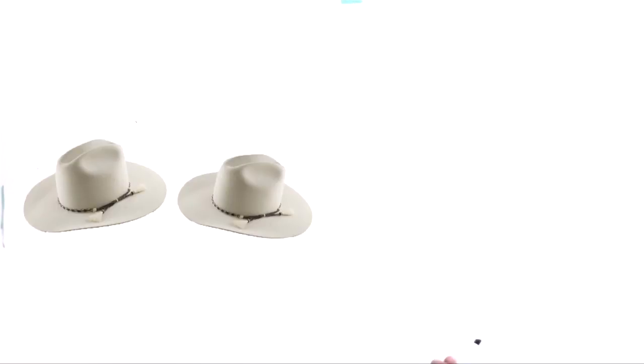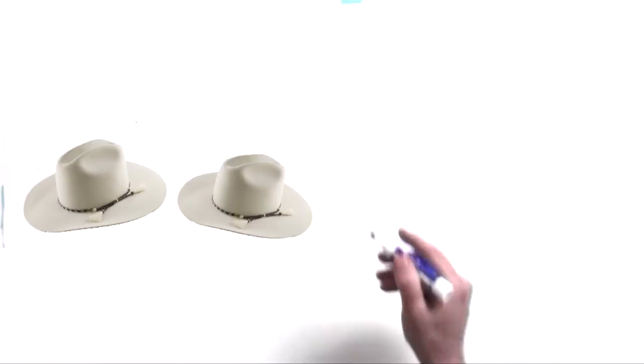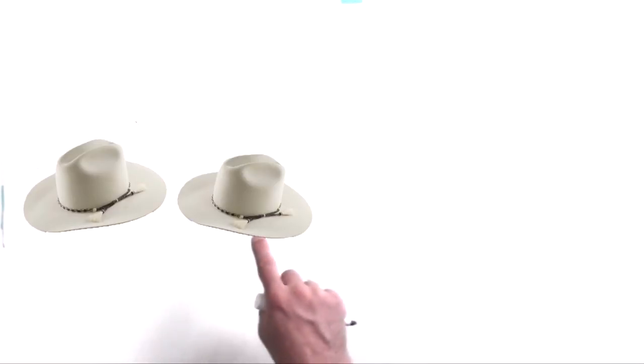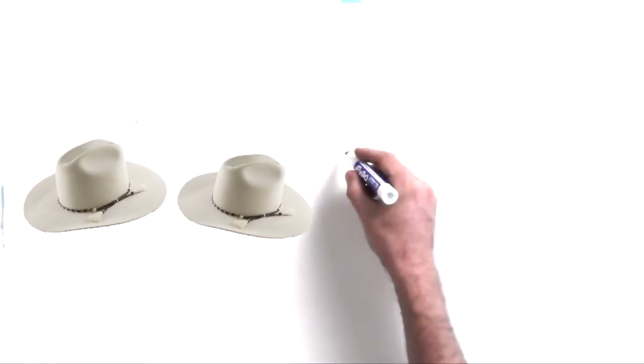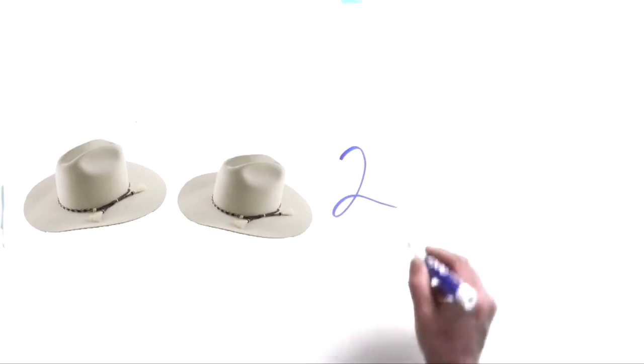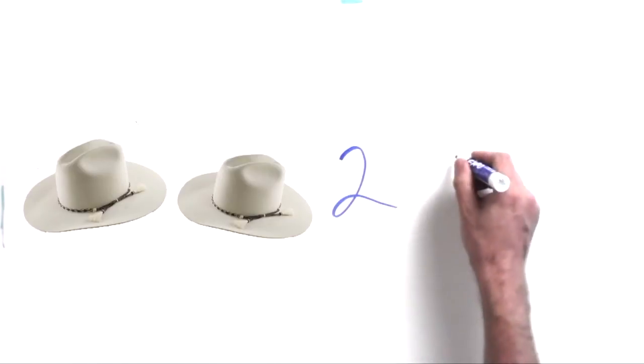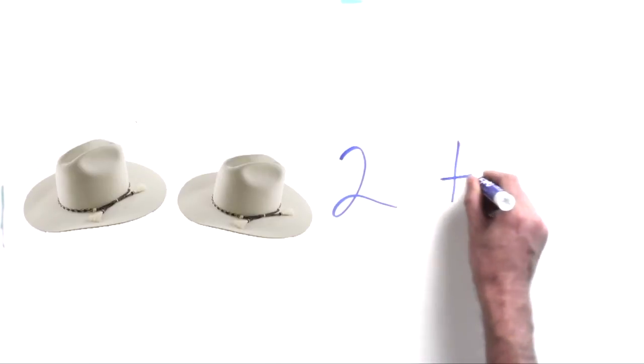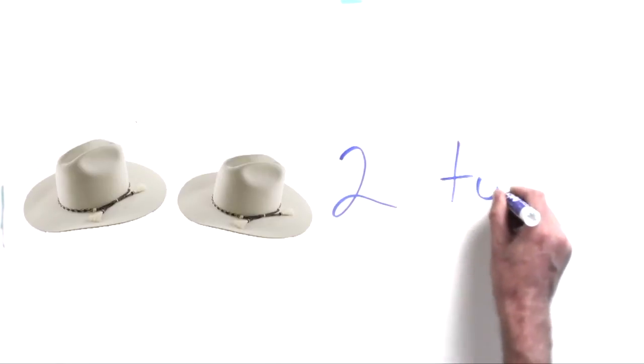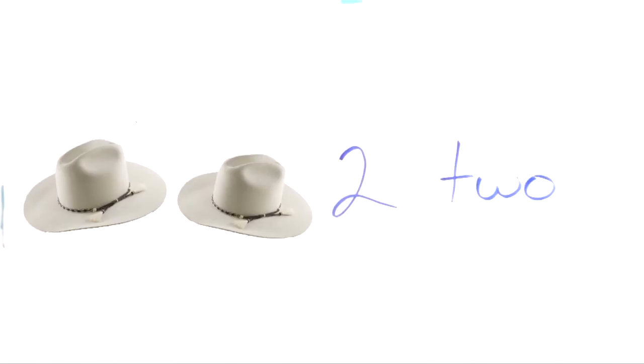Let's go on to the next one. Next we have a hat. We have two hats on the screen. So let's write the number two — count them: one, two. Now let's write the number two, and let's write the word two. That's all it is. You can handle this. This is a piece of cake for you.